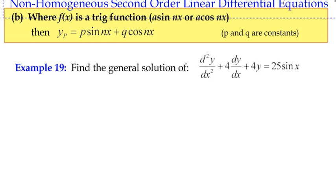We've learned about homogeneous second-order differential equations. We've just looked at the first example of a non-homogeneous. If you haven't seen example 18, go and watch it, because otherwise this really won't make sense at all. So the first example in example 18, our f of x, our right-hand side function, was polynomial.